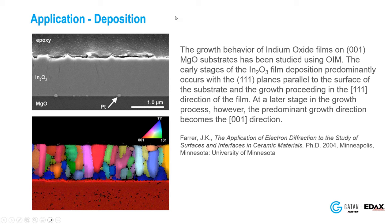Here's a nice example from thin film deposition from former colleague Jeff Ferrer. You see a magnesium oxide substrate with an indium oxide film grown on top. Near the interface, the film is dominated by blue 111-oriented grains. As the film grows, they start to change color, with a preference toward the 001 direction. Looking at a larger area confirms this statistically — you have nucleation at one orientation and then growth at a different orientation, visible in the EBSD results.